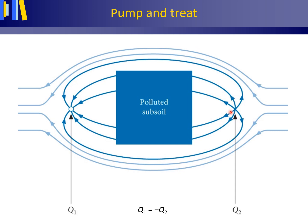Importantly, Q1 equals minus Q2. The left part of this figure is equivalent to the plan view of a well in a regional groundwater flow field. It thus shows streamlines in a regional groundwater flow field as influenced by pumping well Q1.